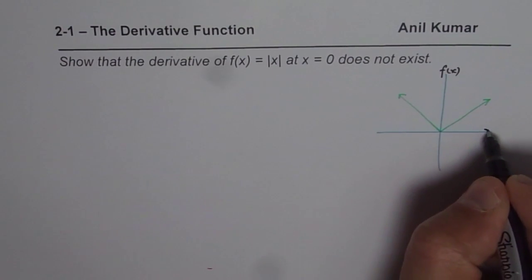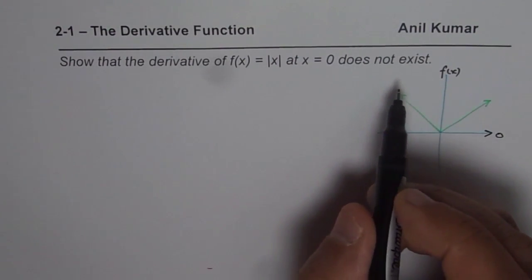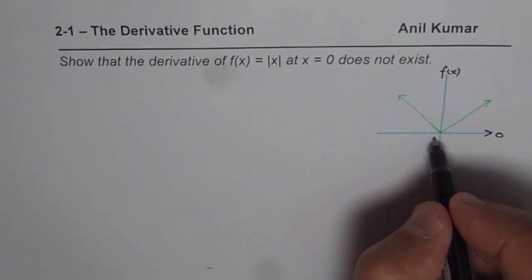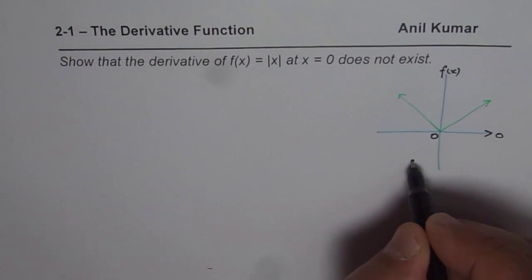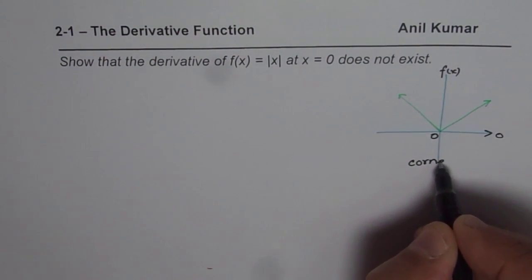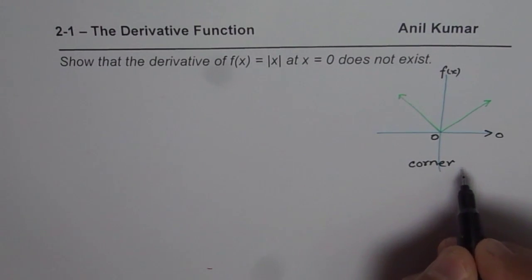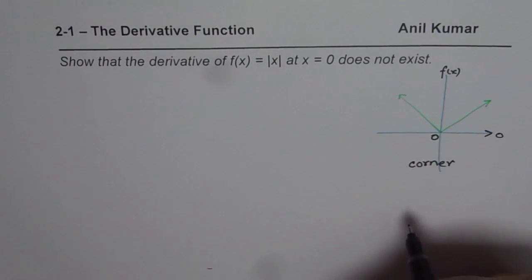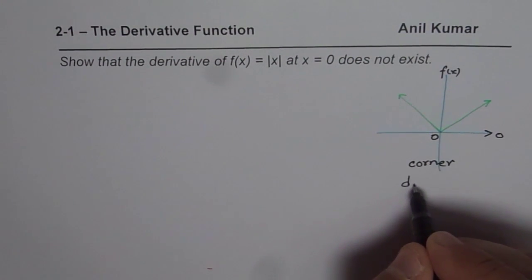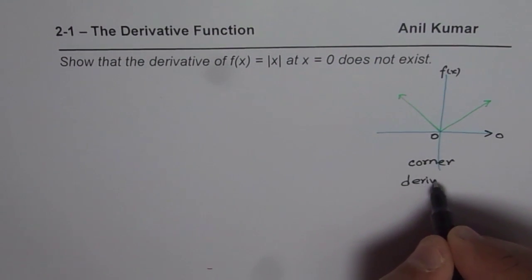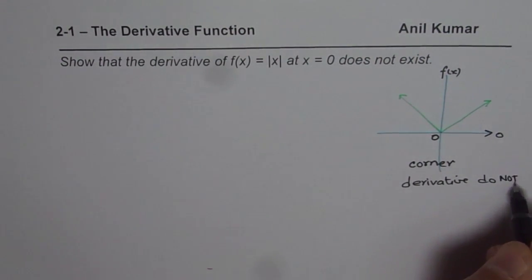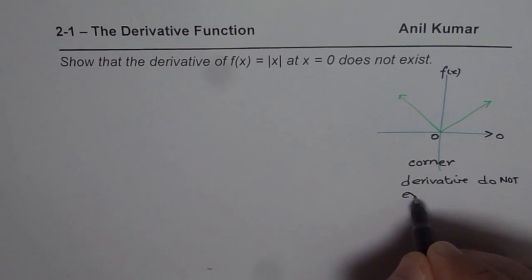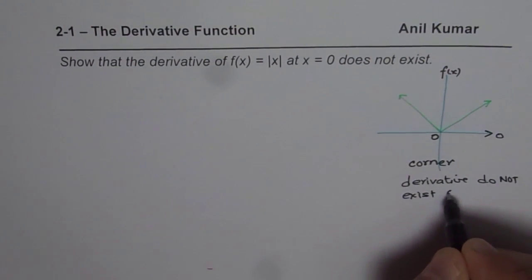So that is the x-axis. Now we need to figure out whether the derivative exists at 0 or not. You see, it is a corner. So at 0 we have a corner. As we have seen in other examples, at corners derivatives do not exist.